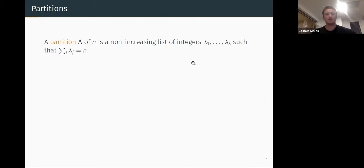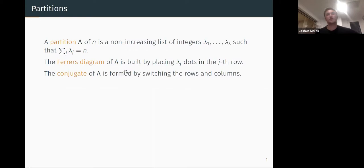So for us, there will always be s parts. What do we do with this? For this talk, we want to look at the Ferrers diagram of lambda. So how do you build this? You just place lambda j dots in the jth row. And the conjugate of lambda is formed by switching the rows and columns of this diagram. We'll see an example in a minute.